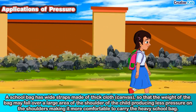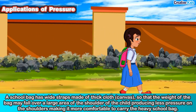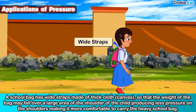One more application: A school bag has wide straps made of thick cloth canvas. Why? The wide straps spread the weight of the bag over a large area on the shoulder of the child. Since pressure is inversely proportional to the area of contact, larger area means lesser pressure, making it more comfortable to carry a heavy school bag on the shoulder.